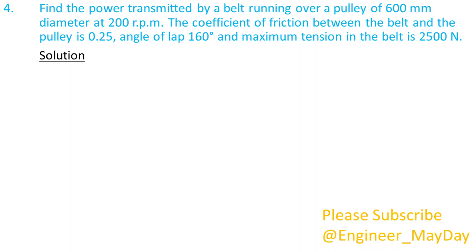Solution. Given D equals 0.6 meters, N equals 200 rpm, Mu equals 0.25, Theta equals 2.793 radians, T1 is equal to 2500 newtons.